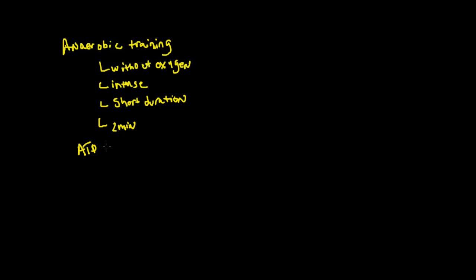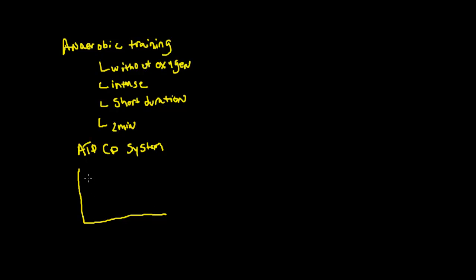If you've watched some of the other videos, we have the ATP-CP system, which generates energy for short-duration exercise — anywhere from about two seconds to ten seconds. Typically, for the first two seconds you're running off the immediate source of ATP stored within the muscle.